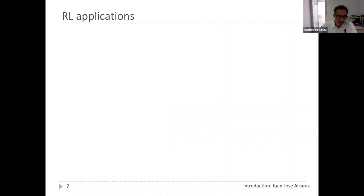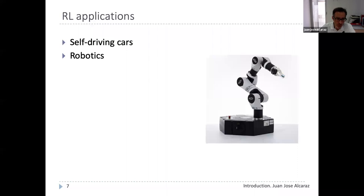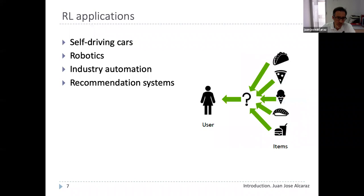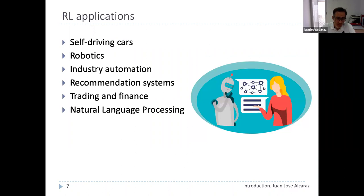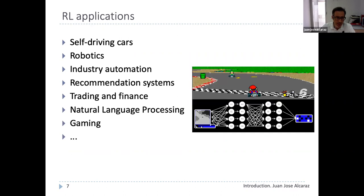Reinforcement learning is currently a very hot topic. By the middle of the last decade, large tech companies began investing heavily in RL, bringing significant advances in practical applications. The best thing about RL is that it is very flexible — in principle it can be applied to any environment where we can make observations and take decisions. This includes self-driving cars, robotics, automation of industrial processes, recommendation systems like Netflix or Amazon, trading and finance, natural language processing for conversational systems, gaming, and many other areas.